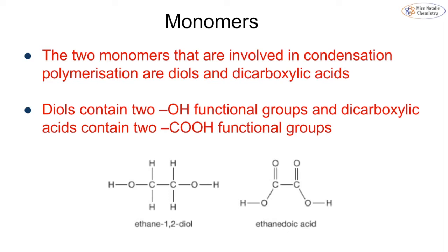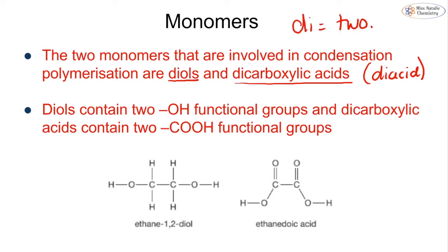We have to modify our monomers because standard alcohols and carboxylic acids can only form one ester bond. We introduce a diol or a dicarboxylic acid — sometimes called a diacid. The prefix 'di' means two, like in diatomic molecules. Diols contain two OH functional groups and dicarboxylic acids contain two COOH groups, so each can lose a hydrogen or OH on both sides and join together in a long chain.